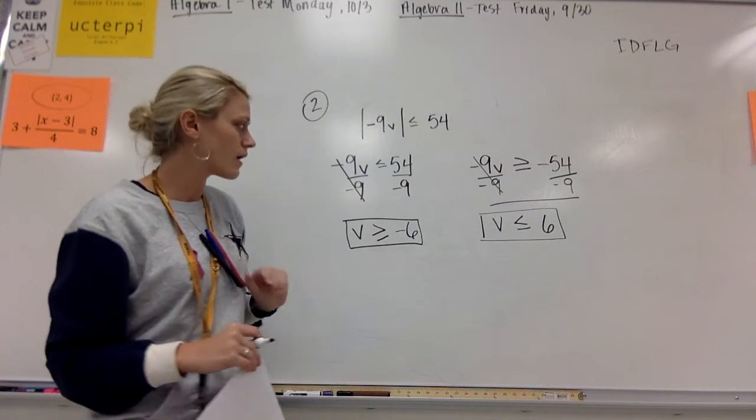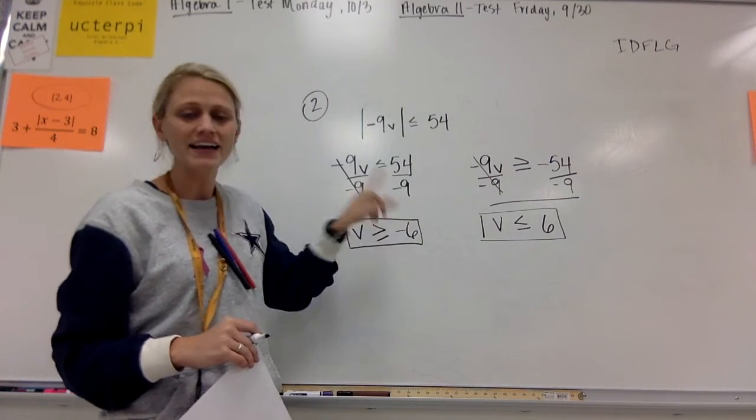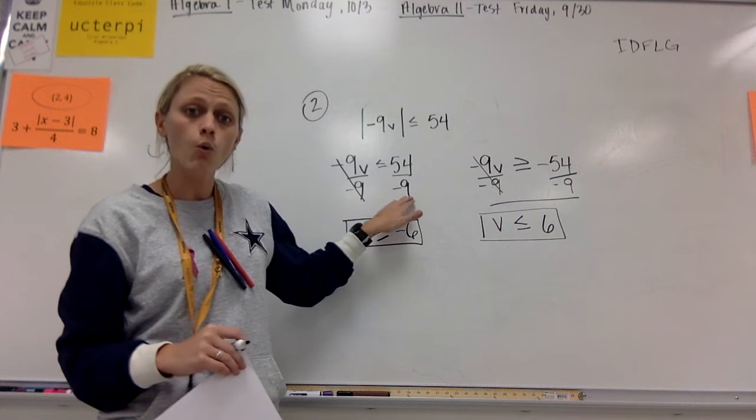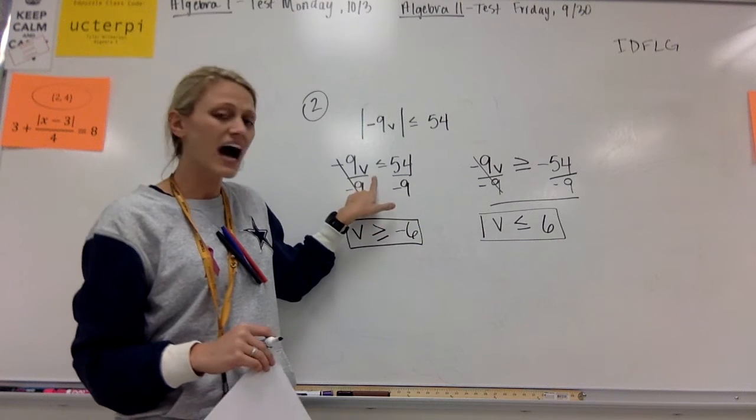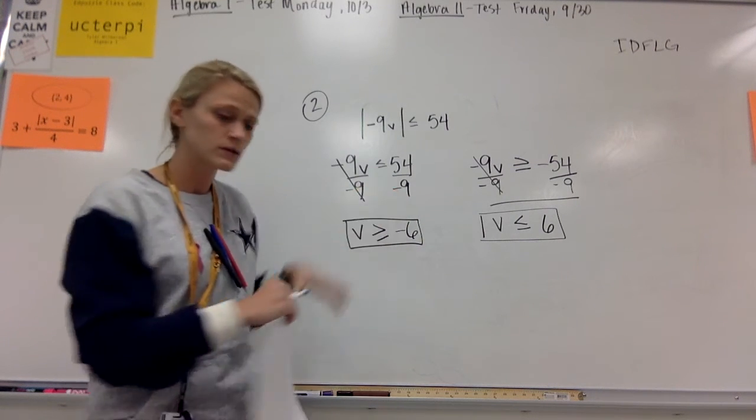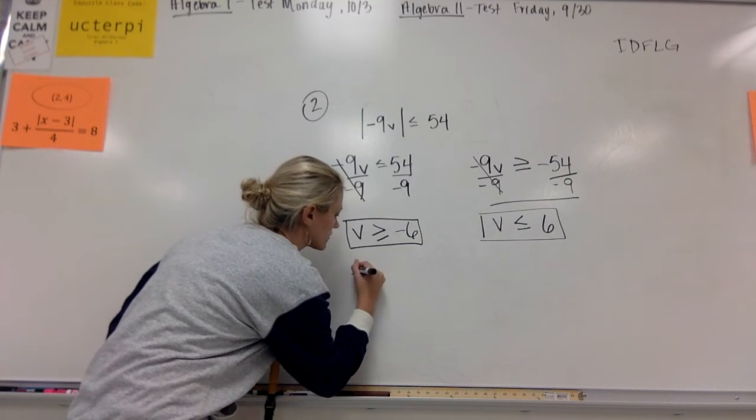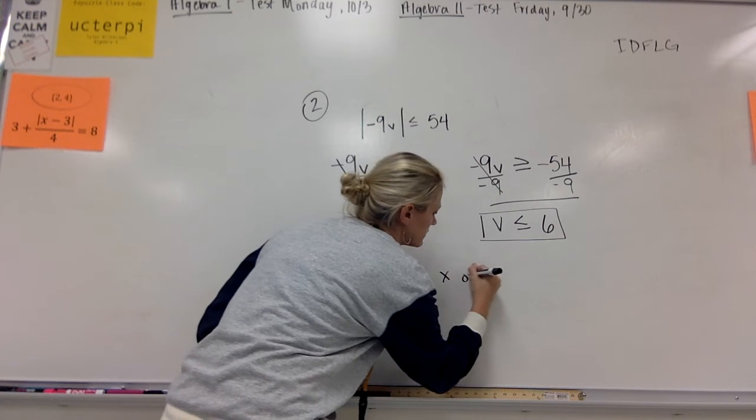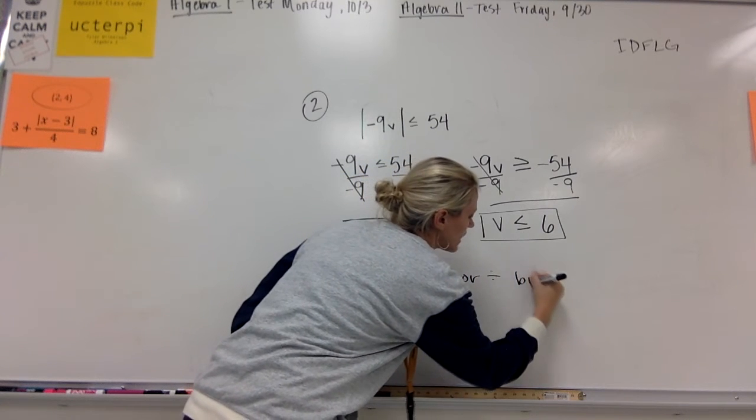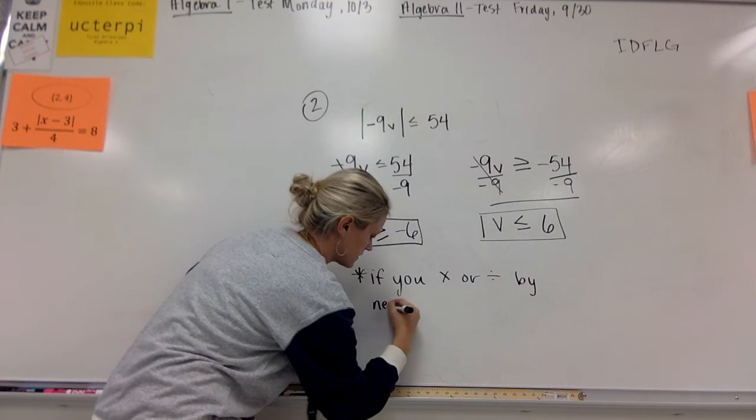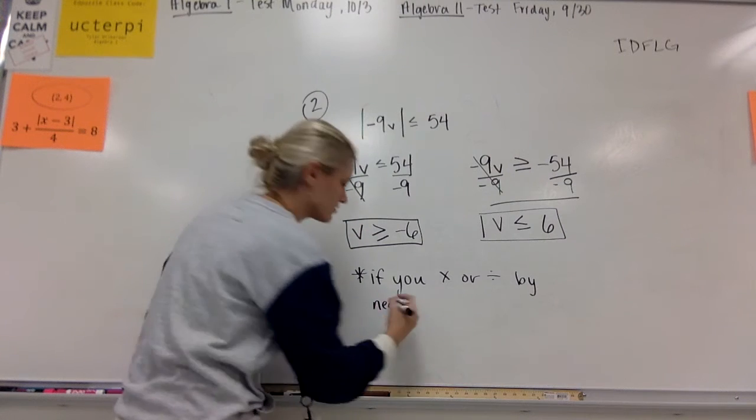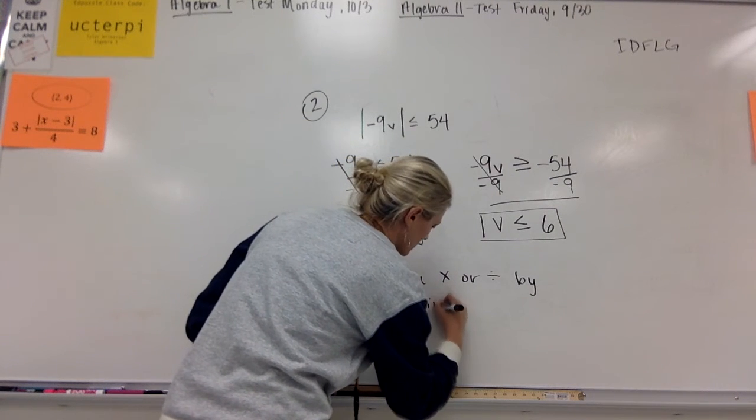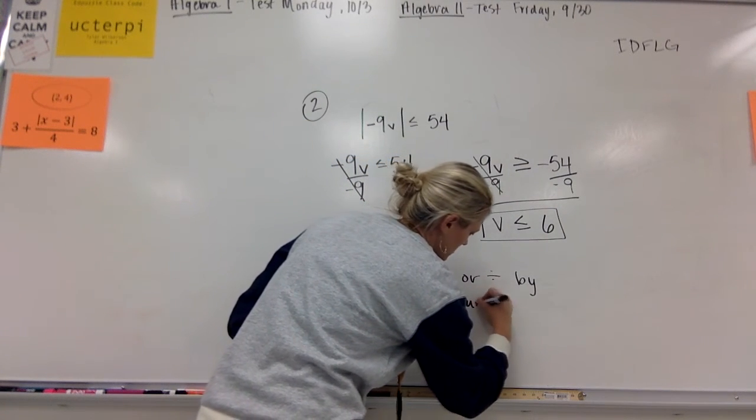And then one more thing to keep in mind. If you ever divide, ever divide or multiply by a negative, you've got to flip this symbol around. I'll make a little note of that here. So if you multiply or divide by a negative, flip your inequality.